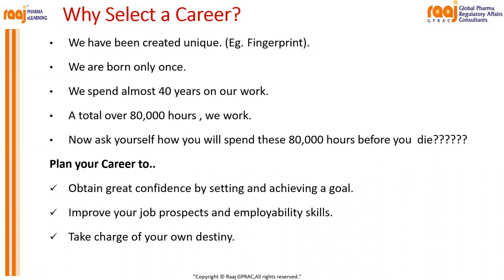The 4D principle: the first D is Desire and Dream, the second D is Determination, the third is Dedication, and the fourth is reaching your Destination. The 2P principle: the first P is Passion — you should have passion to meet your aspiration and achieve your goal — and the second P is Patience. The 2P and 4D principle will help you build a good career in your life.